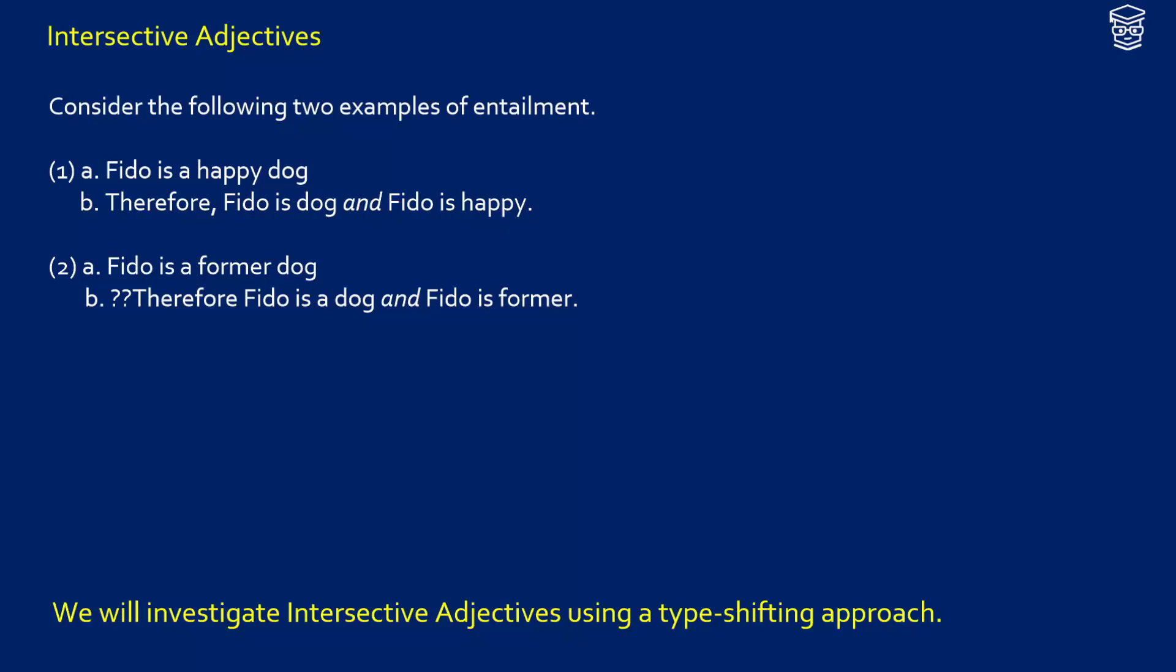We're going to talk about intersective adjectives using a type-shifting approach for our Lambda Calculus. So let's consider two different sentences, look at entailment, and figure out what intersective adjectives even are.